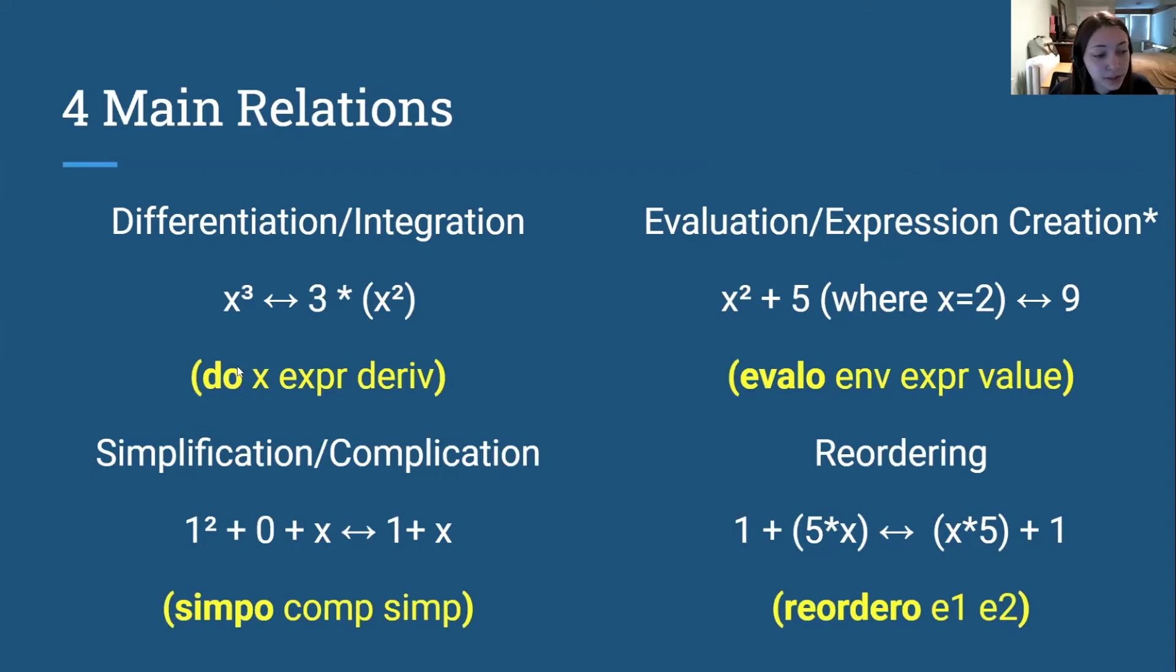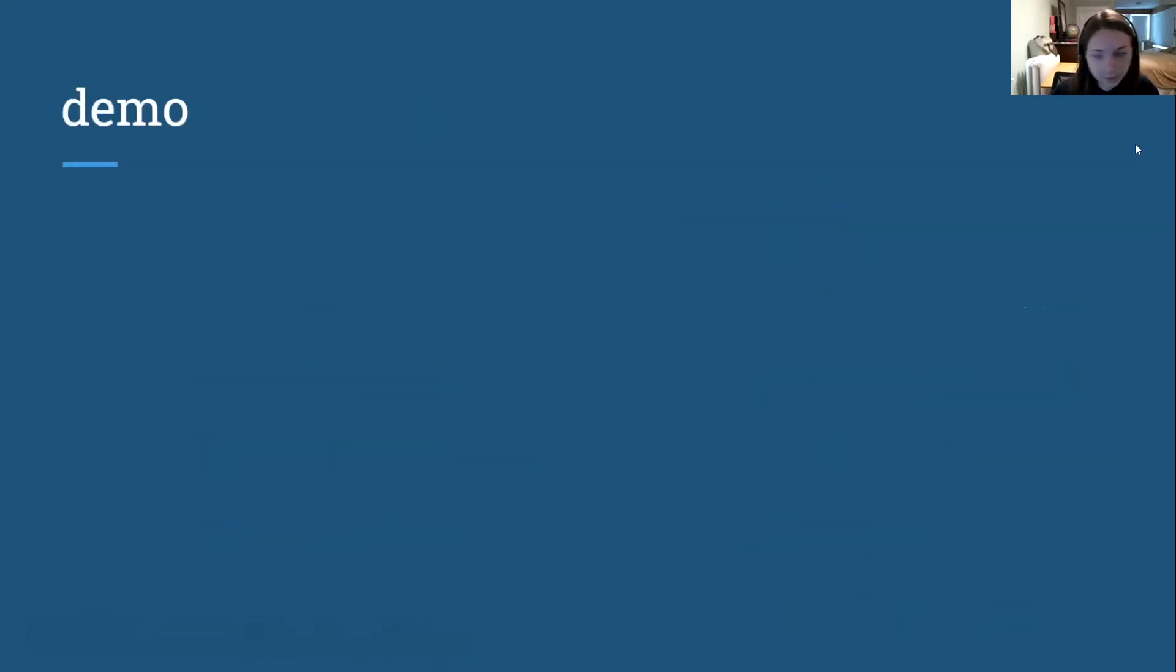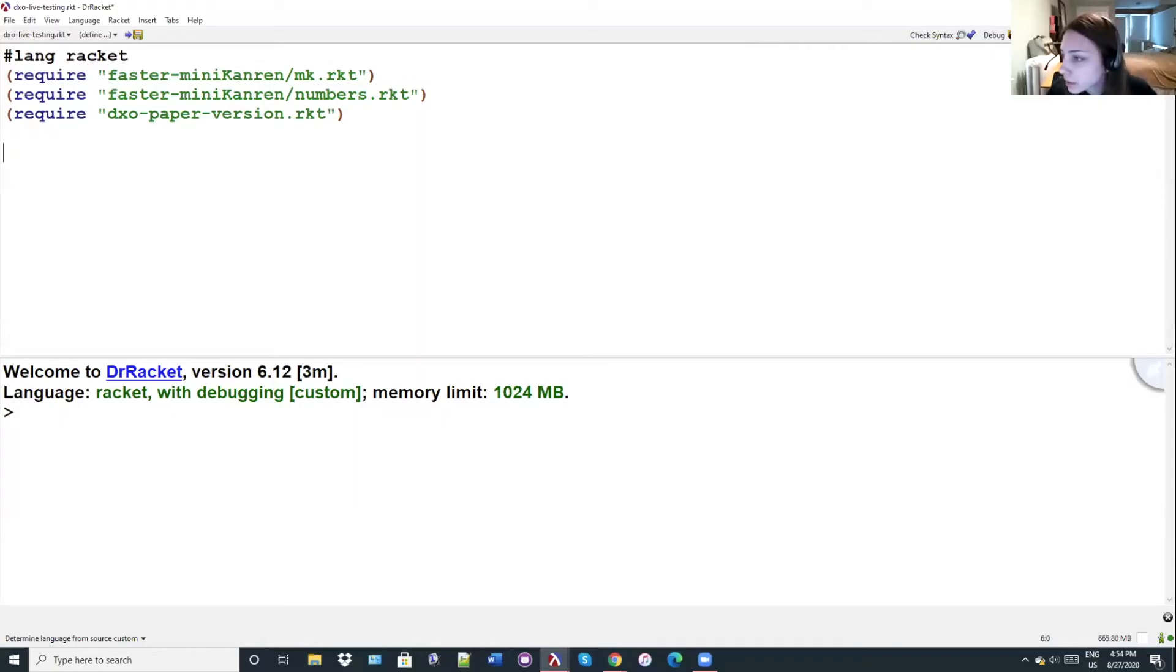But they are duo, so that takes an expression, its derivative with respect to a variable. And then simpo takes a not necessarily simplified expression, comp, and then its simplified form with certain simplification rules that we have. And then evallo takes an environment which maps variables to their olignum values, and then expression and its value. And then reordero just takes two expressions.